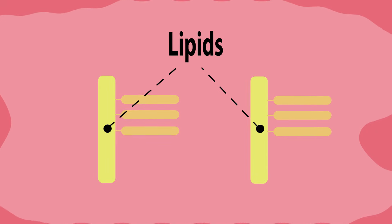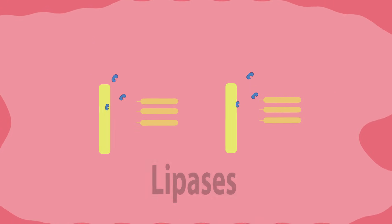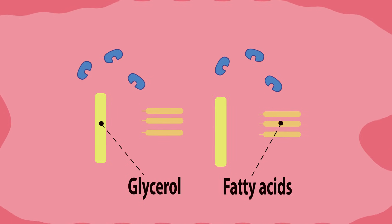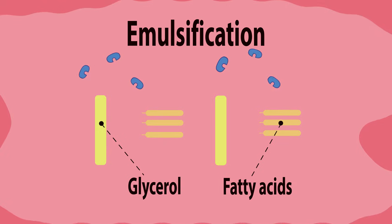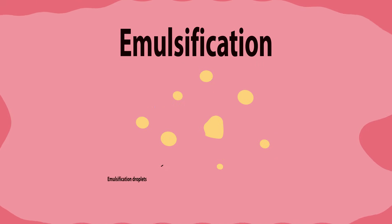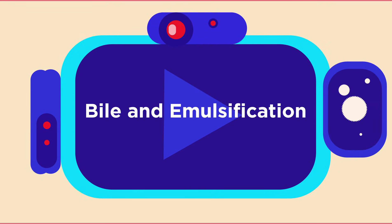And the last group of food: lipids. Lipids are digested by enzymes called lipases into glycerol and fatty acids. But it's not an easy job — it requires a process called emulsification to take place first. Emulsification breaks the lipids into smaller droplets, giving a larger surface area for the lipase enzymes to work on.